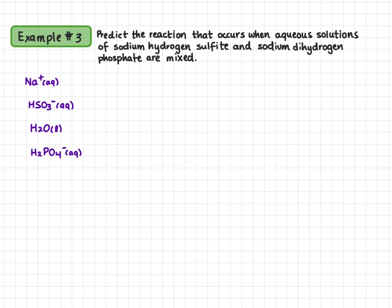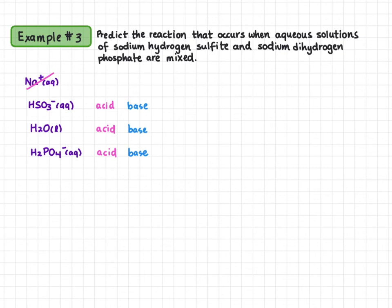We classify these now. Sodium is a spectator ion and won't be involved in the reaction. Hydrogen sulfite is both an acid and a base; water is both an acid and a base; dihydrogen phosphate is both an acid and a base — so all three species are amphiprotic. Looking on pages 8 and 9, hydrogen sulfite is our strongest acid and dihydrogen phosphate is our strongest base. Make sure for an amphiprotic species you're looking in the correct column — the acid in the acid column, the base in the base column.